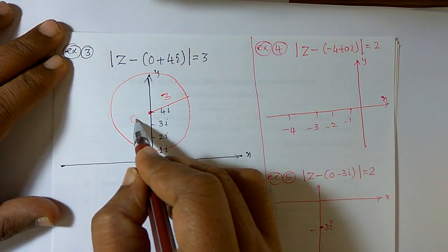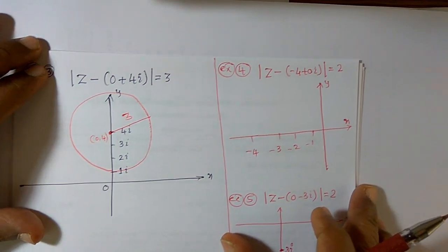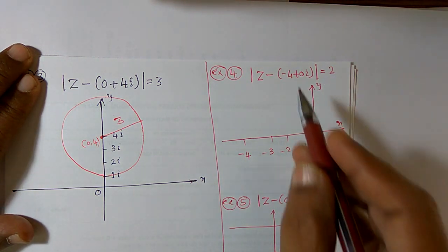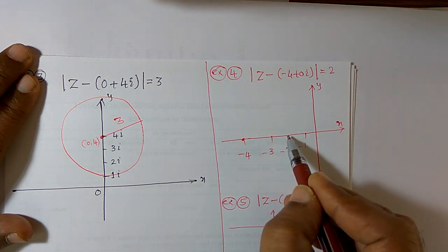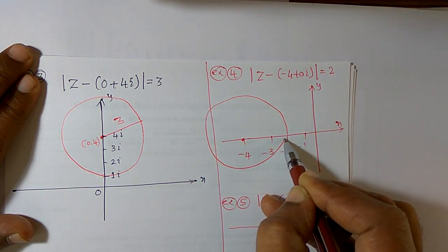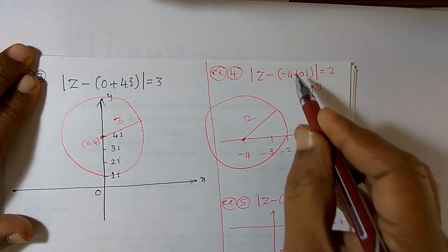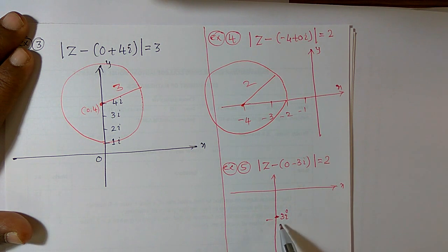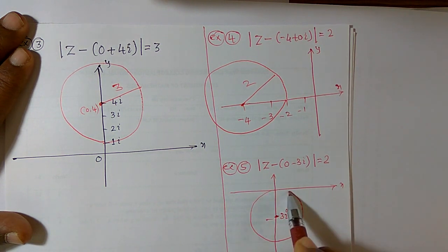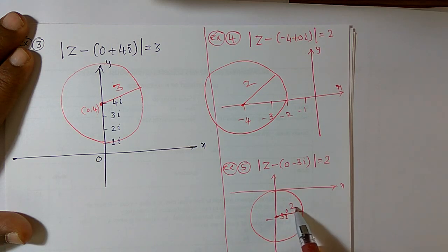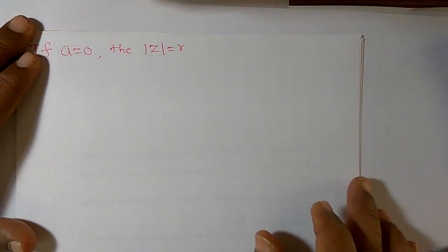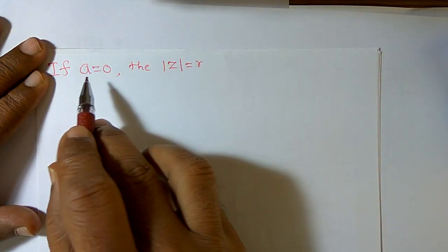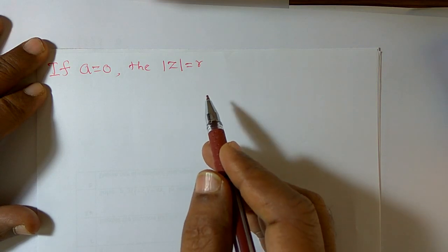Or consider mod of z minus (negative 4 plus 0i) is equal to 2 — center is at minus 4 with radius 2. Or mod of z minus (0 minus 3i) — here minus 3i is the center with radius 2. Like that, you can consider various values for a and r: a is a complex number and r is a real value, and you can draw the corresponding circle.